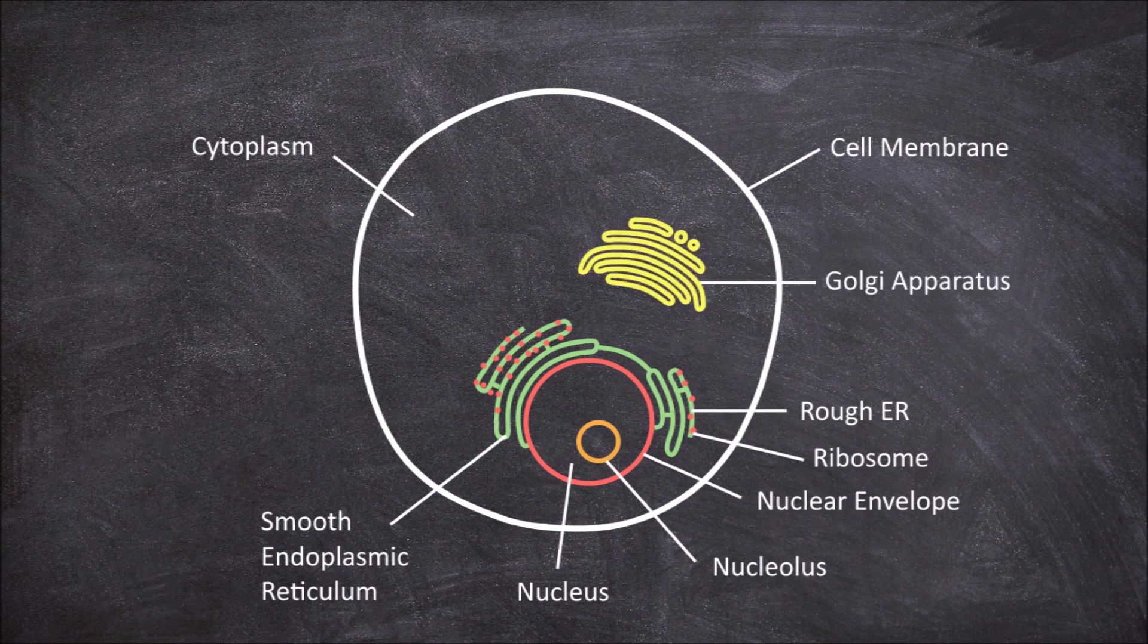The next organelle is the Golgi apparatus which consists of folded membranes and vesicles. The Golgi apparatus is involved in preparing proteins for secretion, the movement of lipid molecules around the cell, and they are also involved in making the lysosomes also found in the cells.